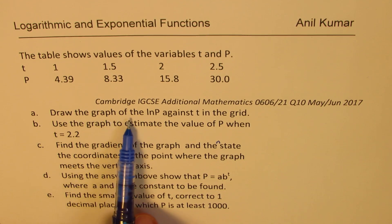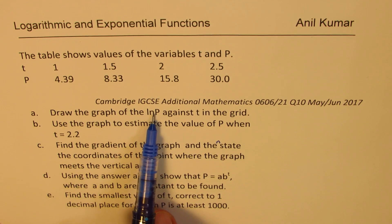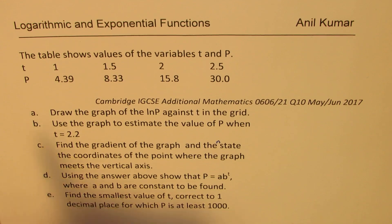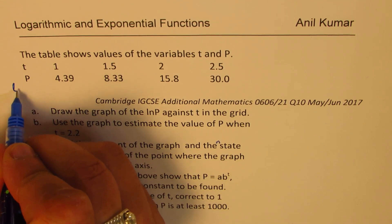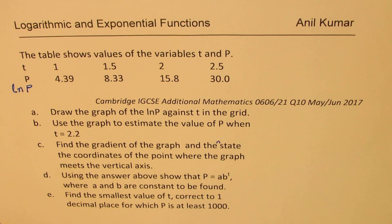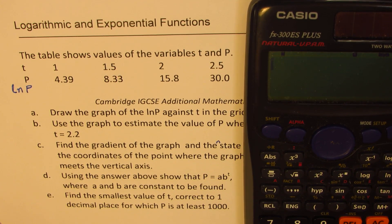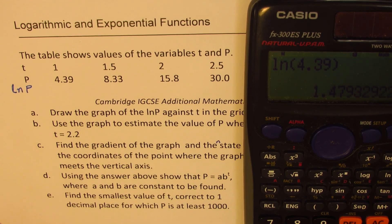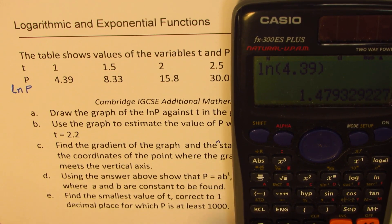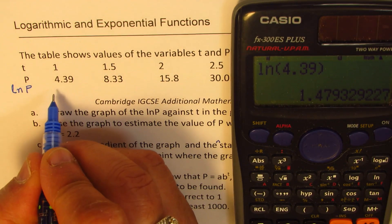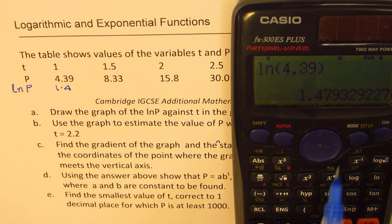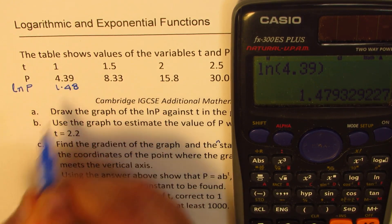First, we need to draw the graph of ln(P) against T in the grid. We are given P, so we need to find what ln(P) is. Let's use the calculator — calculator is allowed here. So ln(4.39) equals 1.479; I'll round all numbers to two decimal places, so I'll write 1.48.